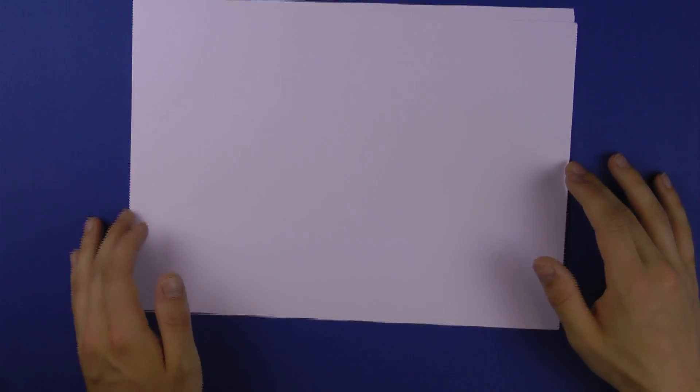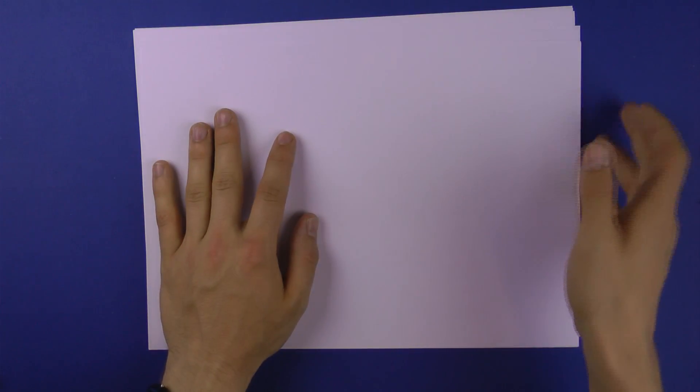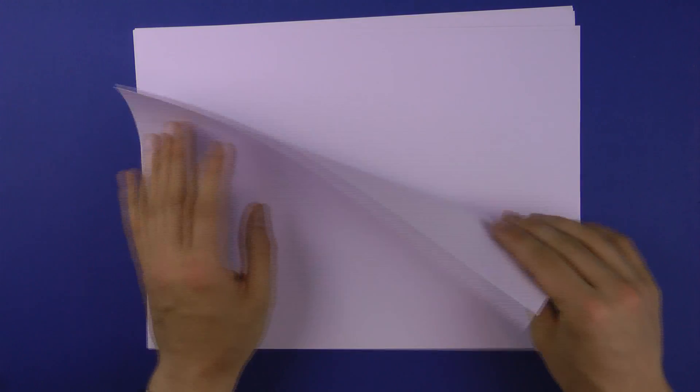So for origami we need obviously paper and the best choice is the paper you have of course, because if you first need to get something you might end up not folding at all which is the worst decision you could make. Ordinary printer paper is actually a pretty good choice.